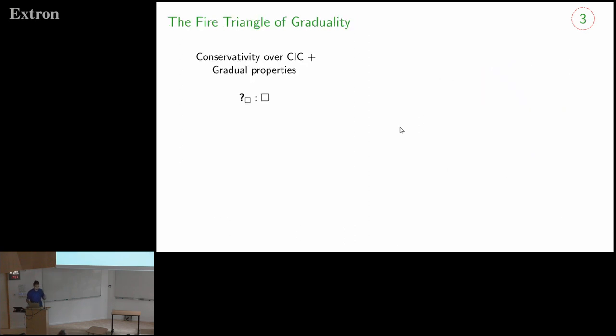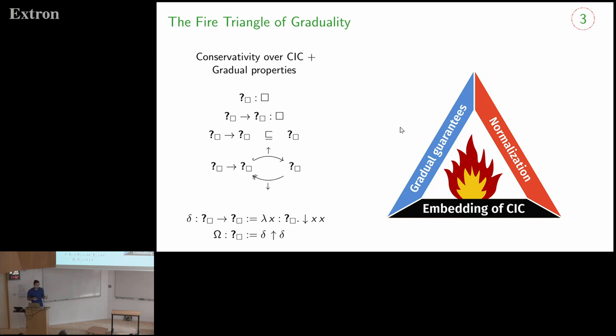So now, if we look at this setting of a gradual dependent type theory, I told you that we had this unknown type, which is an element of some universe that I write square. Assuming that I'm conservative over CIC, and I have gradual properties that I was showing you in the previous slide, well, I can derive that I have also unknown to unknown, which is an element of my universe. Unknown is maximal for precision, so unknown to unknown is less precise than unknown. And by gradual properties, I will get an embedding and projection pair from the function space to unknown. And this might recall you something from your untyped lambda calculus class, because from this I can actually define omega, like a divergent term.